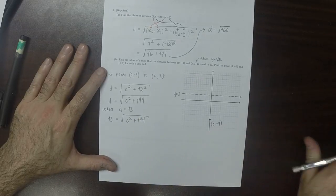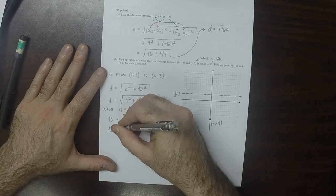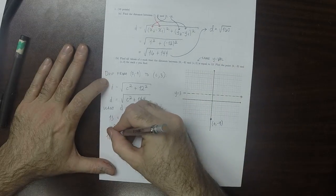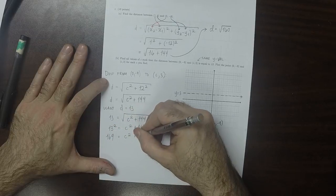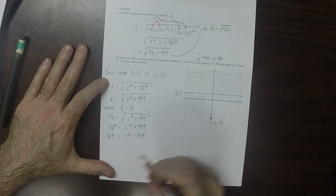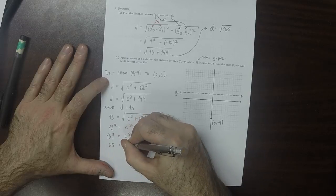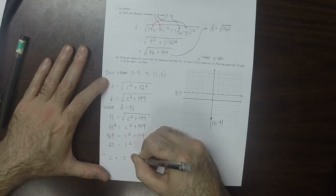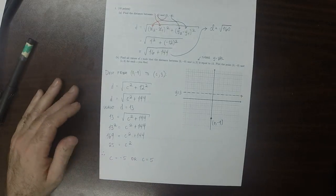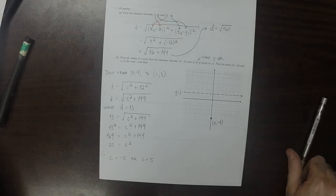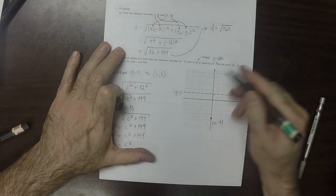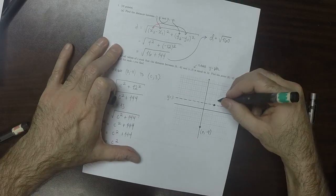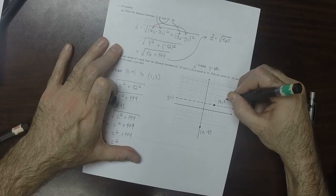We square both sides: 13 squared equals c squared plus 144. Well, 169 equals c squared plus 144. Subtract 144 from both sides: 25 equals c squared. Therefore there are two solutions: c is negative 5, or c is 5. So there are two solutions on this line: the point (5, 3) and the point (-5, 3).